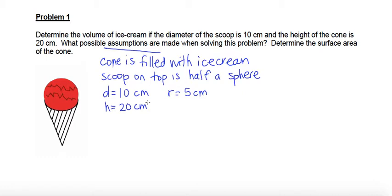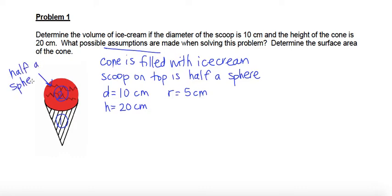The first thing we want to do is determine the volume of ice cream in this cone. In order to do that, we need to find the volume of shape 1, which is going to be our cone, and the volume of shape 2, which is going to be our half of a sphere.